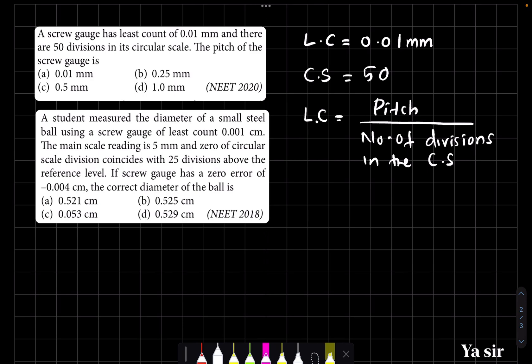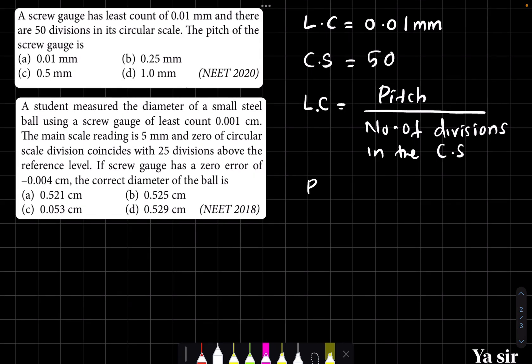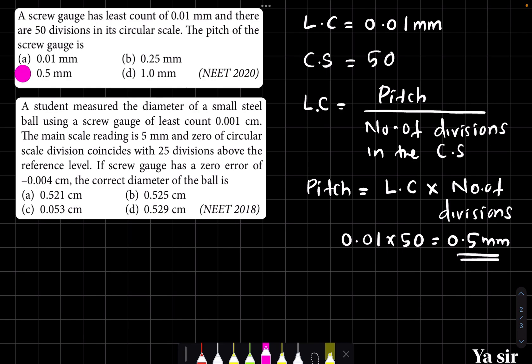Here, the least count and number of divisions are given, so we need to find the pitch. Rearranging the formula: pitch equals least count times number of divisions. So, 0.01 times 50 equals 0.5 millimeter. That's the correct answer.